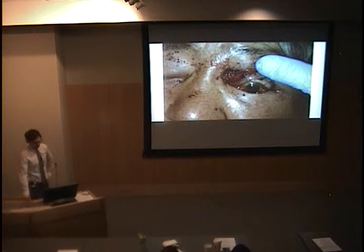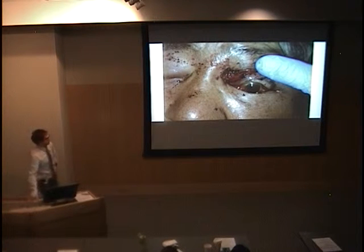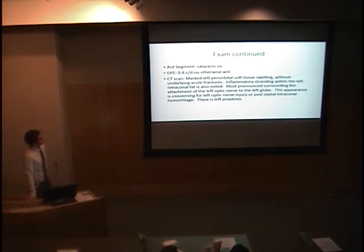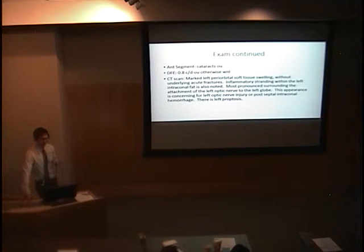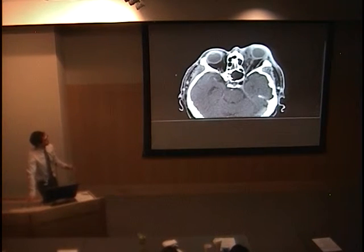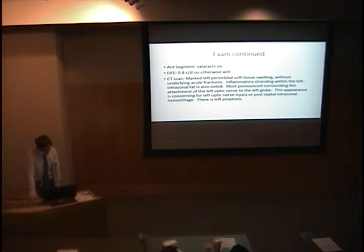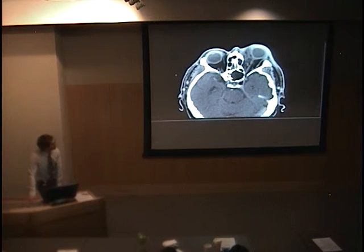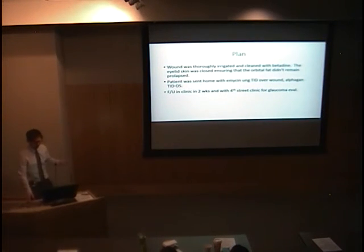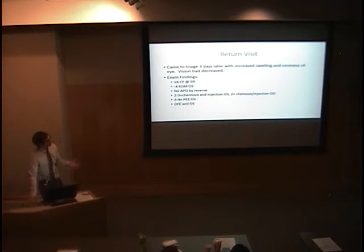He was sent home and asked to follow up. Three days later he returned with increasing swelling, soreness, and decreased vision — from 20/40 to count fingers. He could no longer move his eye. Three MDs confirmed there was no APD. He had significant chemosis and injection bilaterally and a terrible-looking corneal surface. The dilated exam was unremarkable. On exam it looked like a big mass of pus. The resident sent him to the ER for scans and cultures, and when trying to clean what appeared to be pus, discovered it was actually his prolapsed orbital fat.